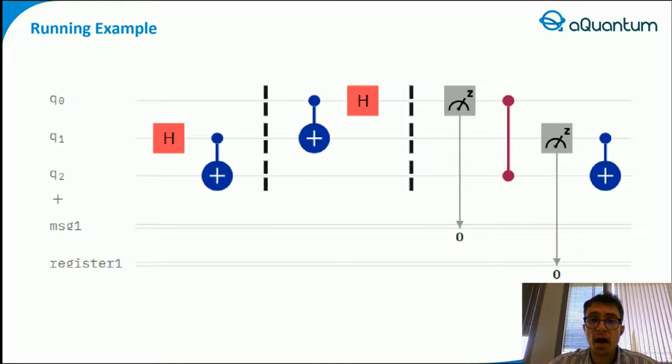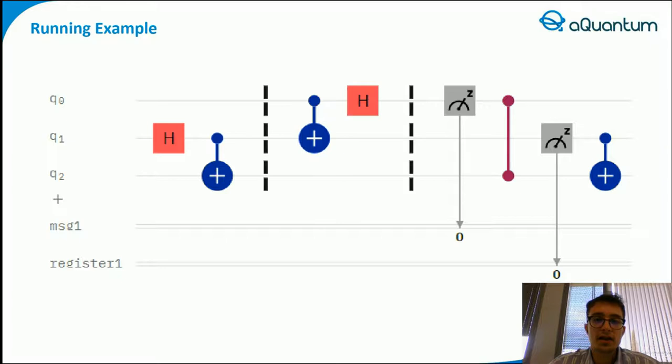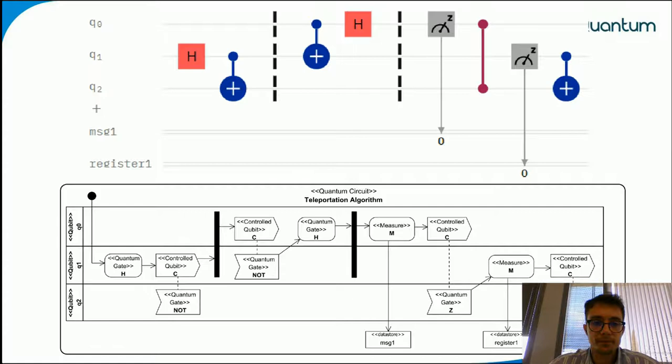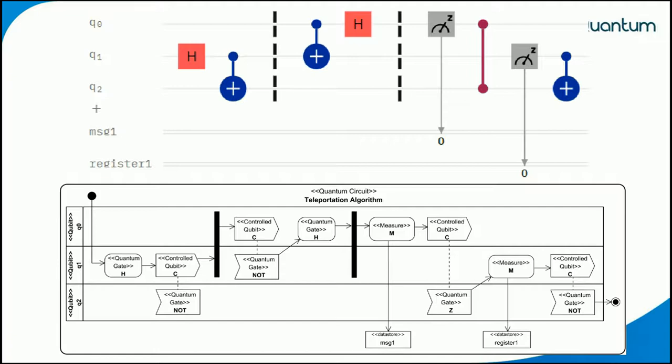In order to illustrate how the quantum UML profile is applied and to demonstrate its applicability, I will provide a running example using the teleportation algorithm. This algorithm supports quantum teleportation, a technique used to transfer quantum information from source to destination by employing entangled states. In this example, Q0 is the qubit that represents the message to be sent, Q1 is an auxiliary qubit, and Q2 is the target qubit that will receive the information coded in Q0. Q0 is not initialized to make the sample more trivial.